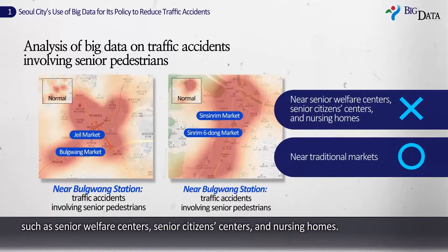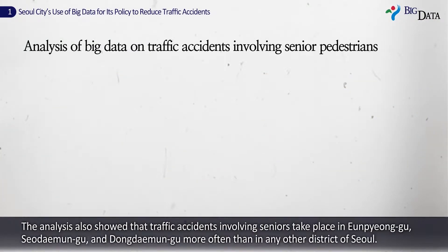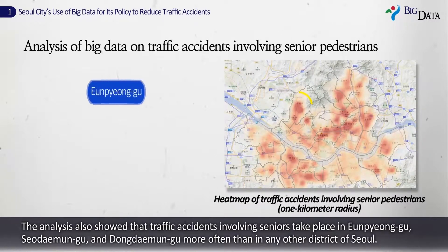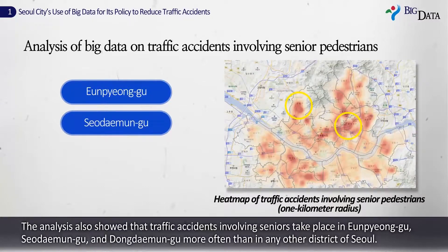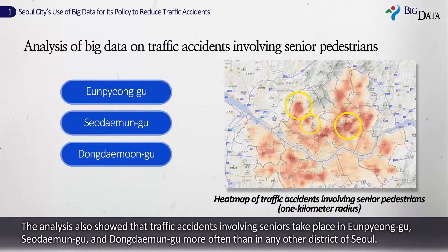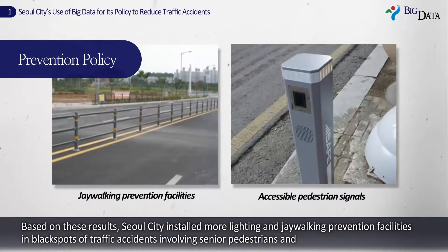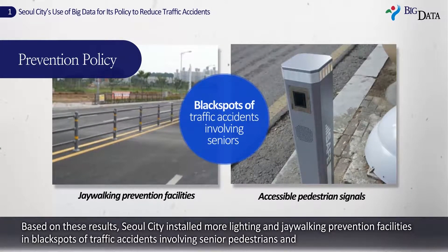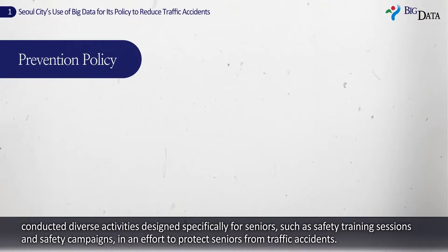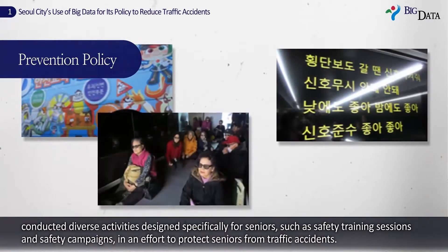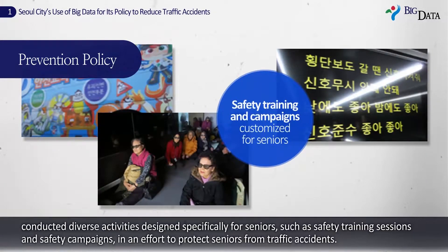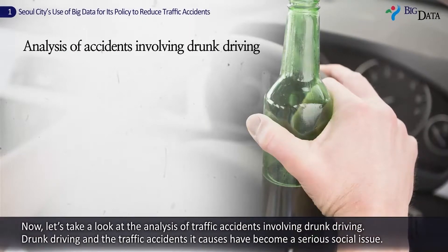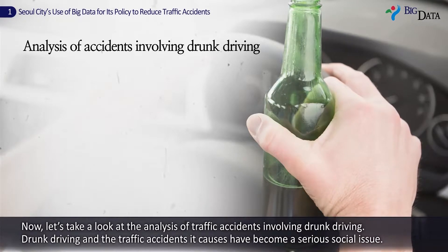The analysis also showed that traffic accidents involving seniors take place in Eunpyeong-gu, Seodaemun-gu, and Dongdaemun-gu more often than in any other district of Seoul. Based on these results, Seoul City installed more lighting and jaywalking prevention facilities in black spots of traffic accidents involving senior pedestrians, and conducted diverse activities designed specifically for seniors, such as safety training sessions and safety campaigns, in an effort to protect seniors from traffic accidents.